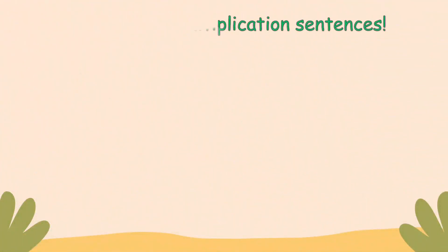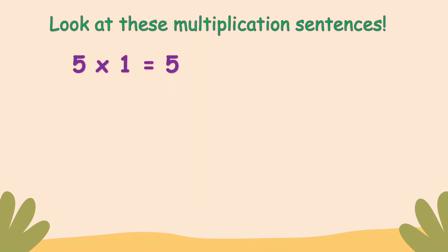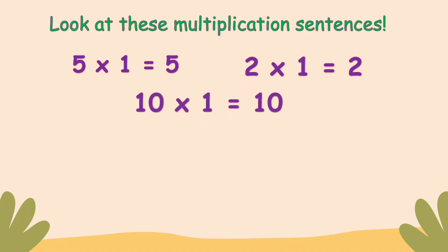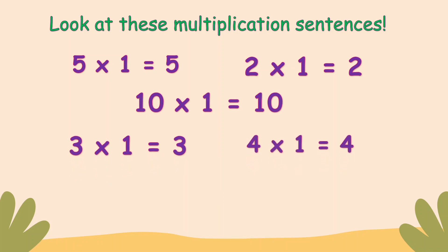Let's look at these multiplication sentences: five times one equals five, two times one equals two, ten times one equals ten, three times one equals three, four times one equals four. What do you notice? When you multiply a number by one, the answer or the product is the given number.